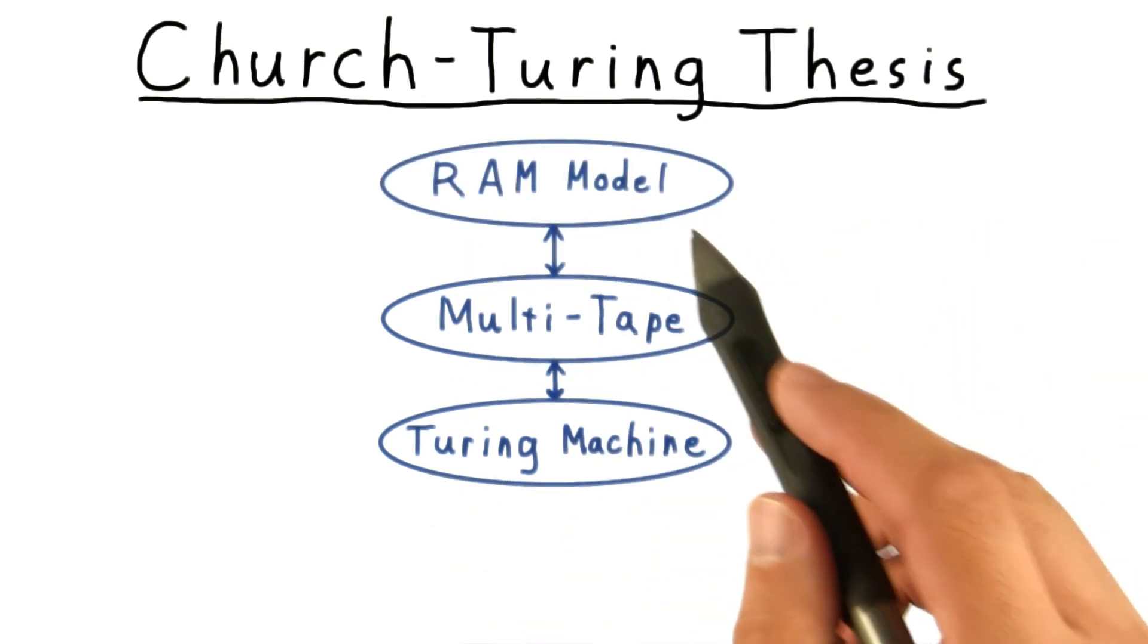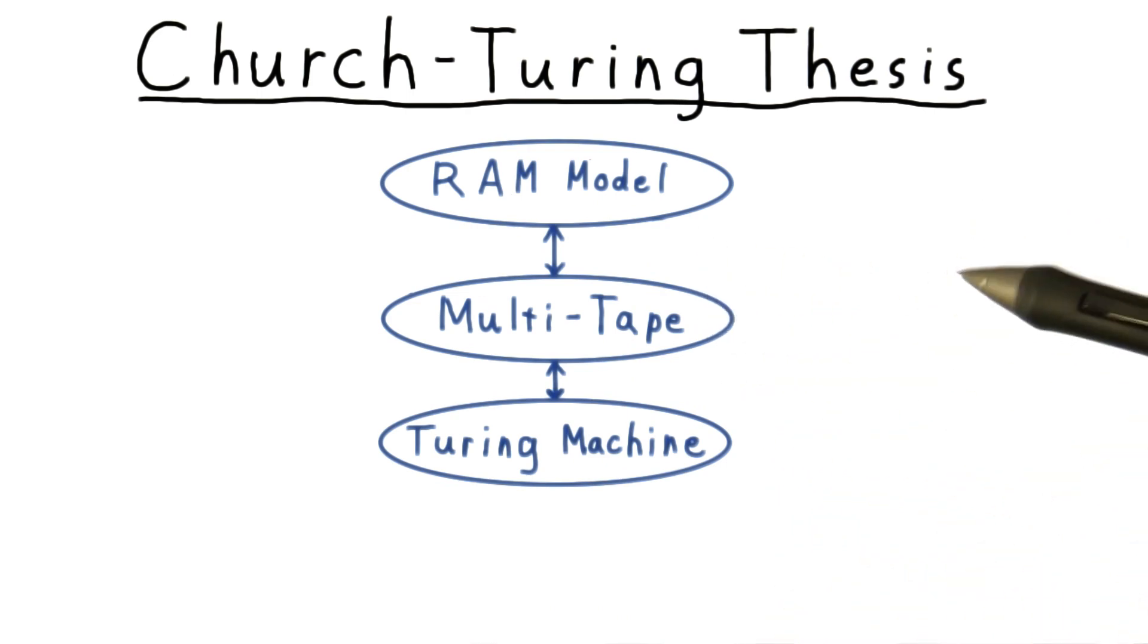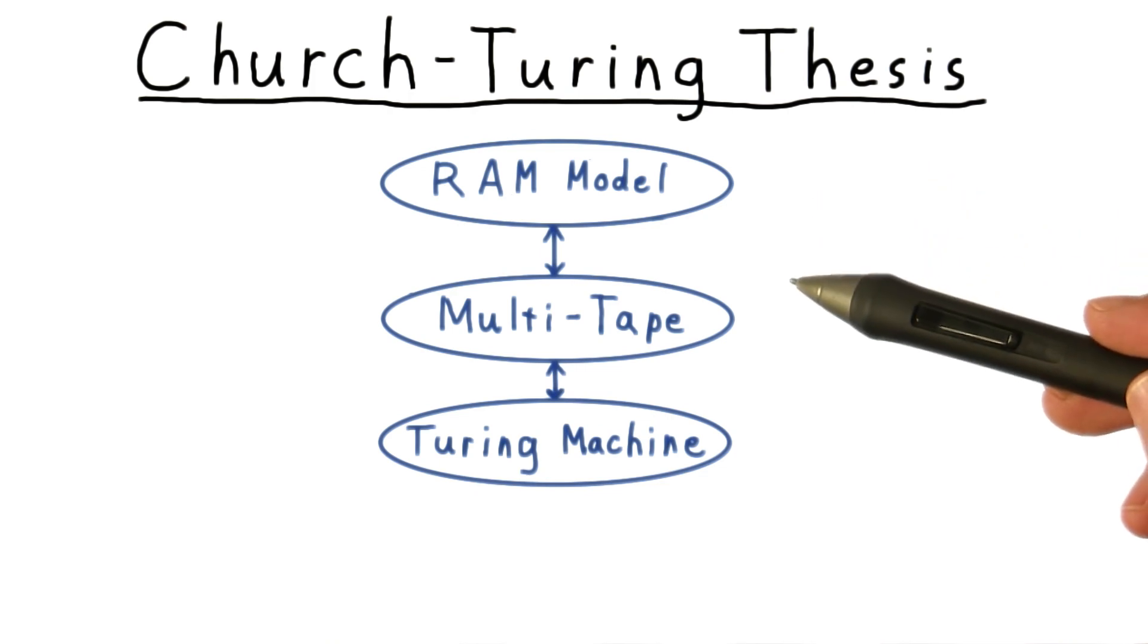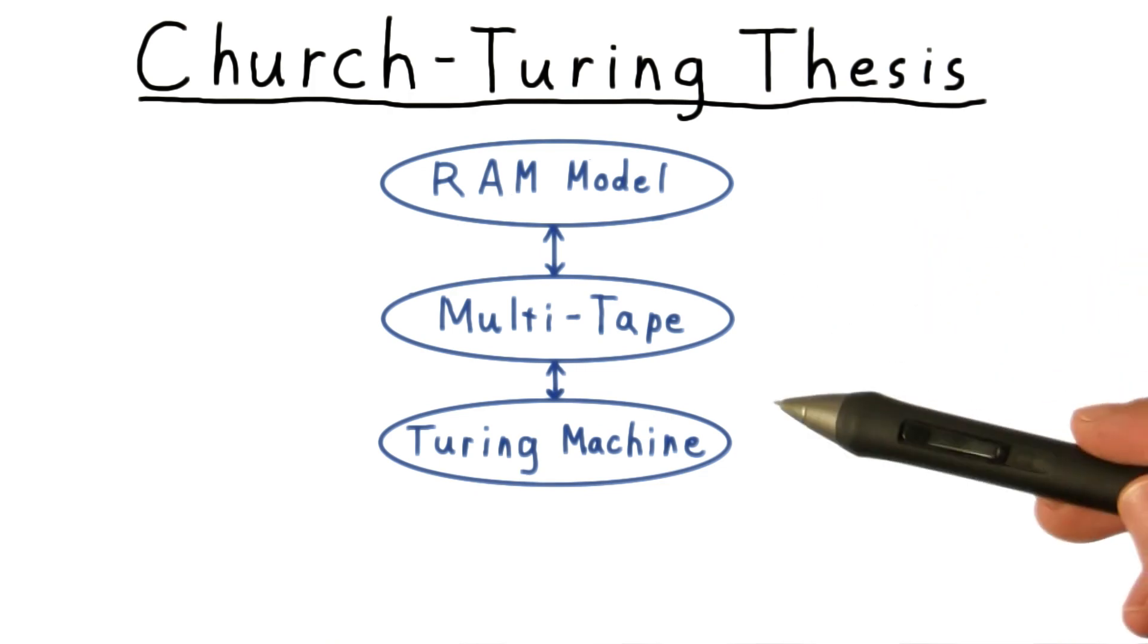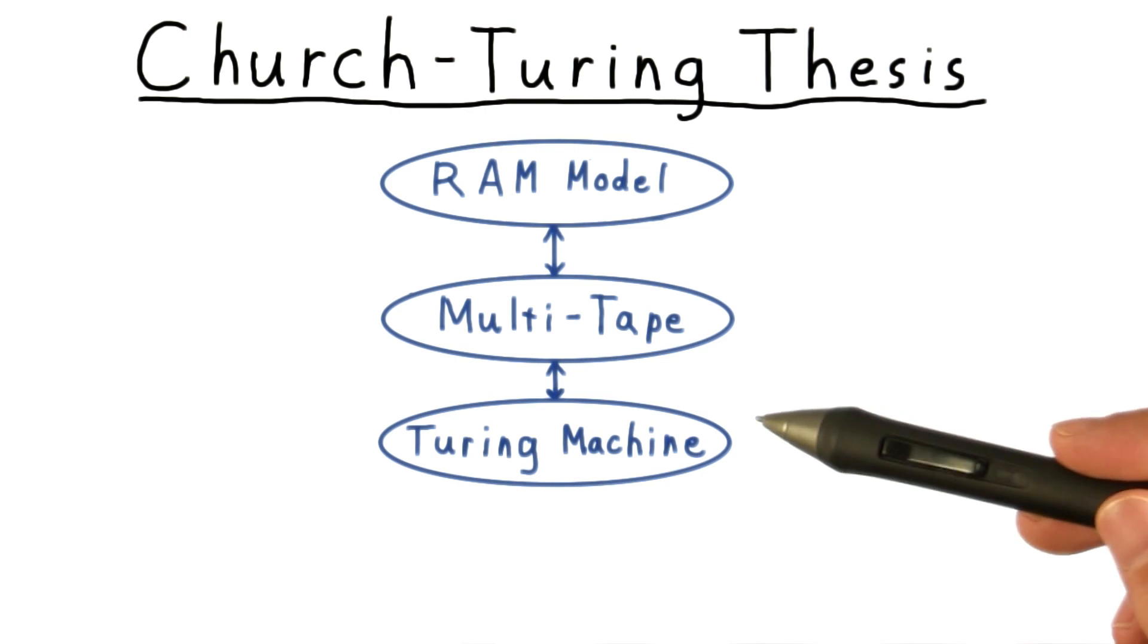Then we'll consider the random access model, a model capturing all the important capabilities of a modern computer. And we will show that it is equivalent to a multi-tape Turing machine. And therefore, it must also be equivalent to a regular Turing machine.